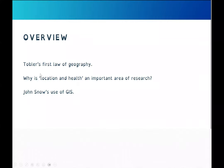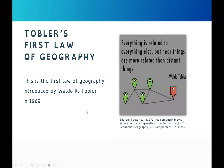We shall go through Tobler's first law of geography, and why location and health is an important area of research in public health and epidemiology. Tobler's first law of geography was introduced by Waldo Tobler in 1969, and it states that everything is related to everything else, but near things are more related than distant things.